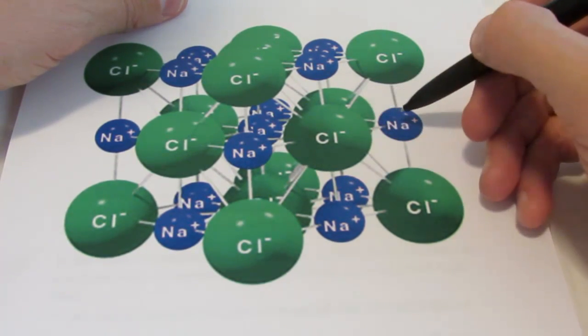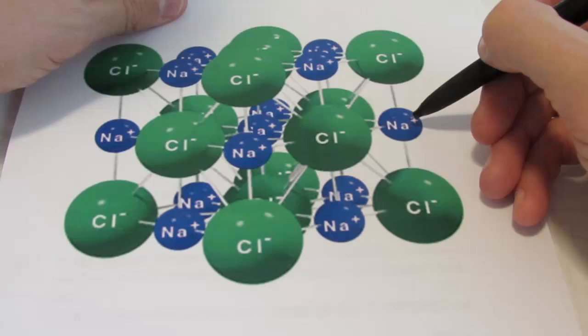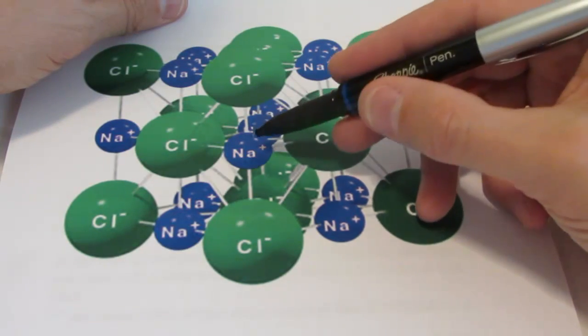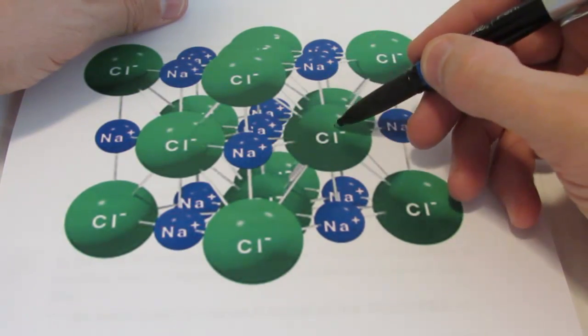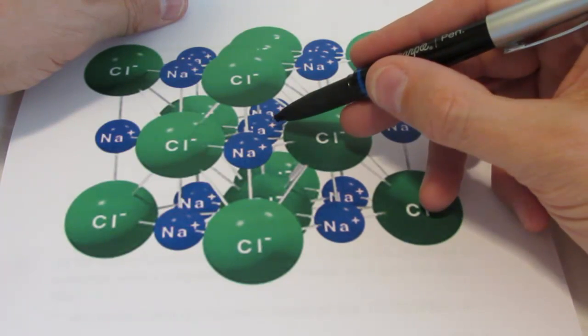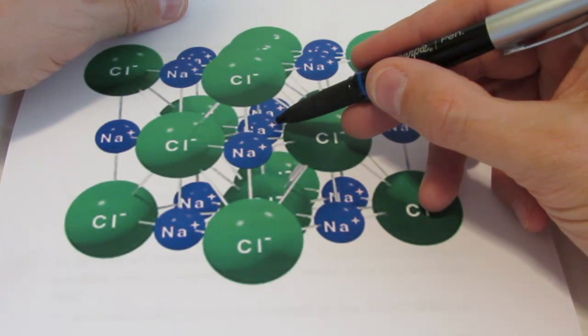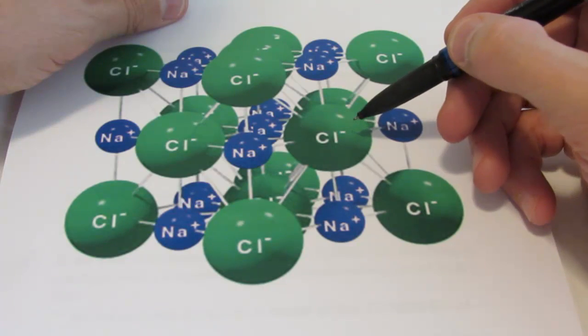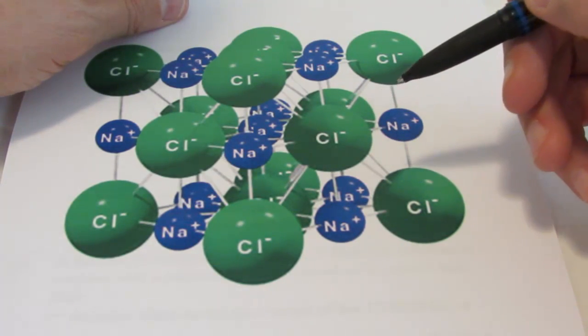Notice that there's no distinct molecule of sodium chloride. This chloride ion is attracted to this sodium ion over here on the right. And it's attracted to this sodium ion on the left, the one above, the one below, and if you look carefully, the one behind it.